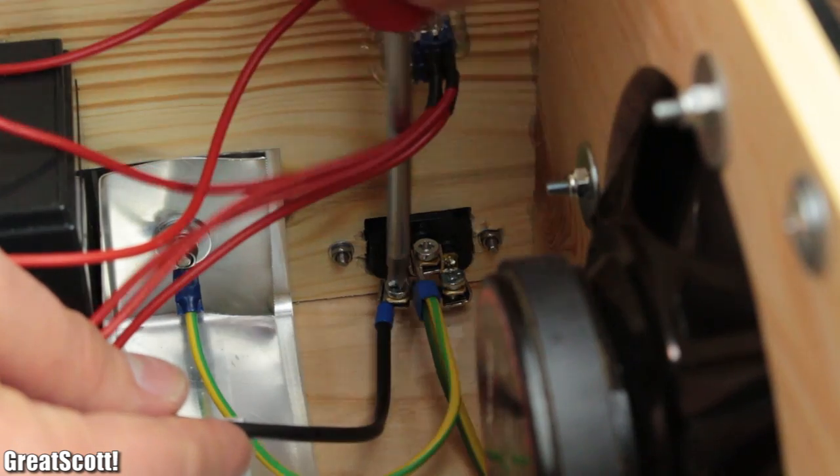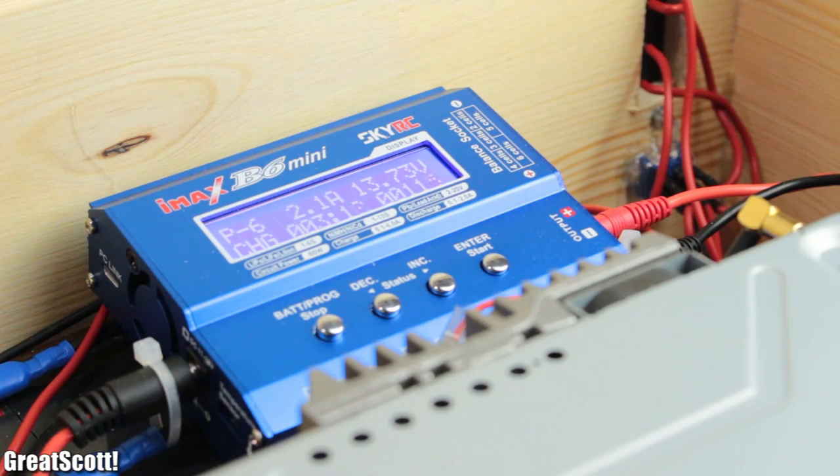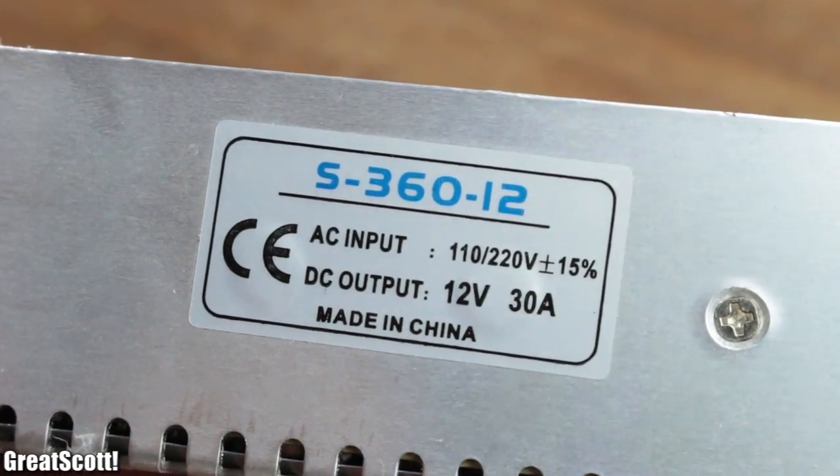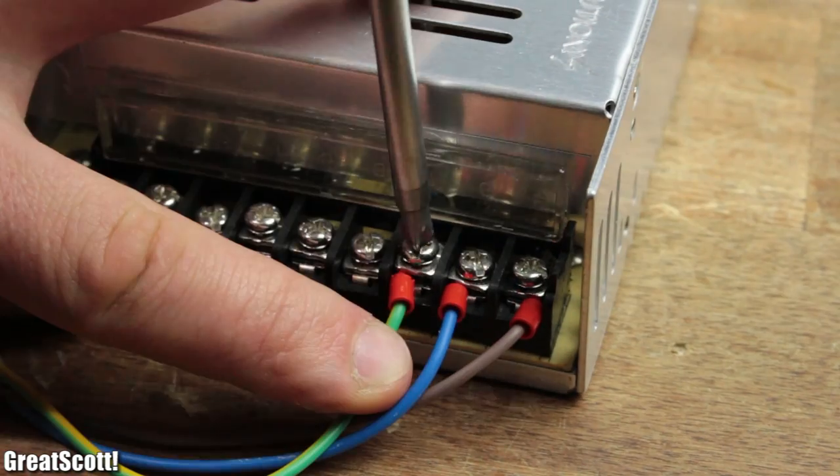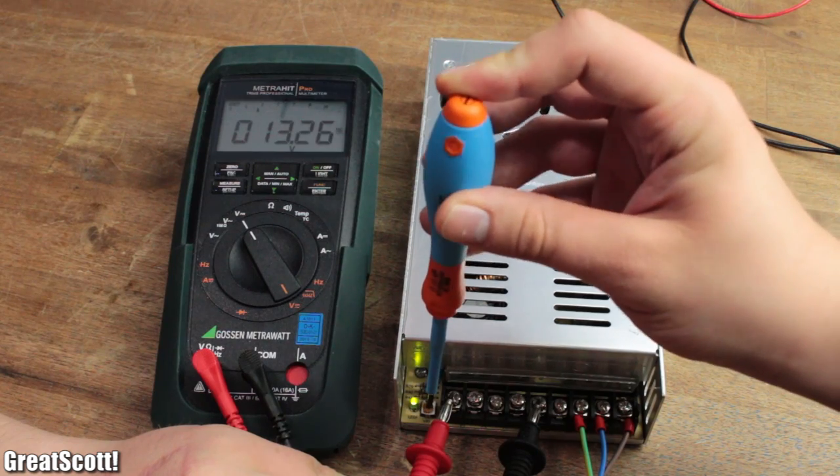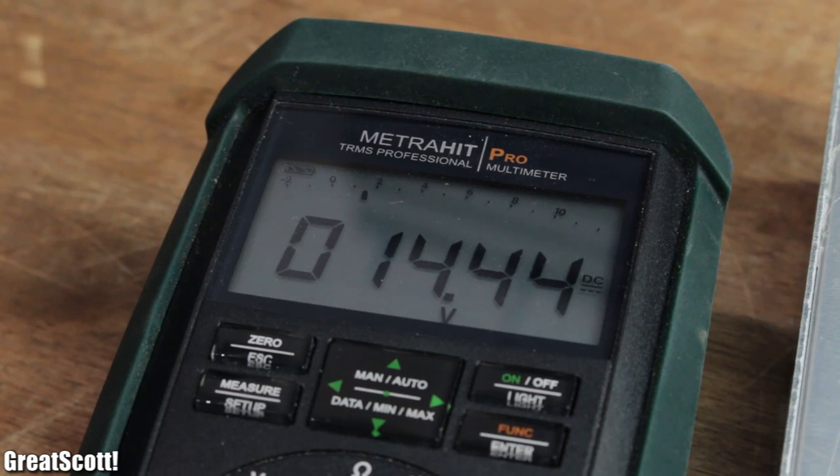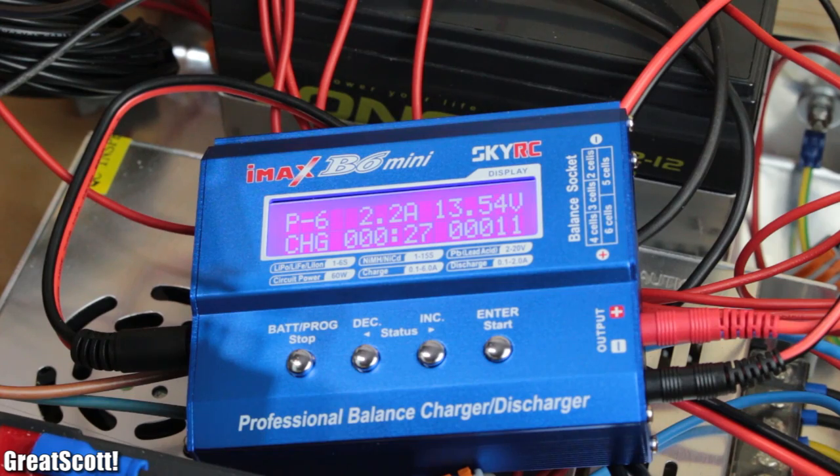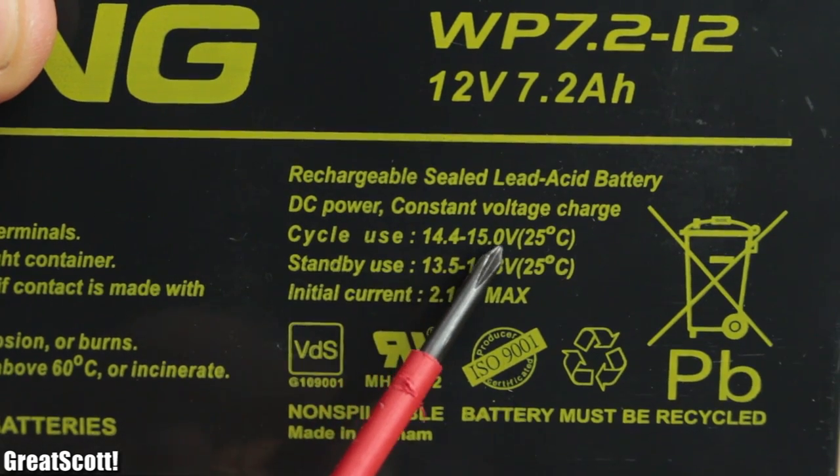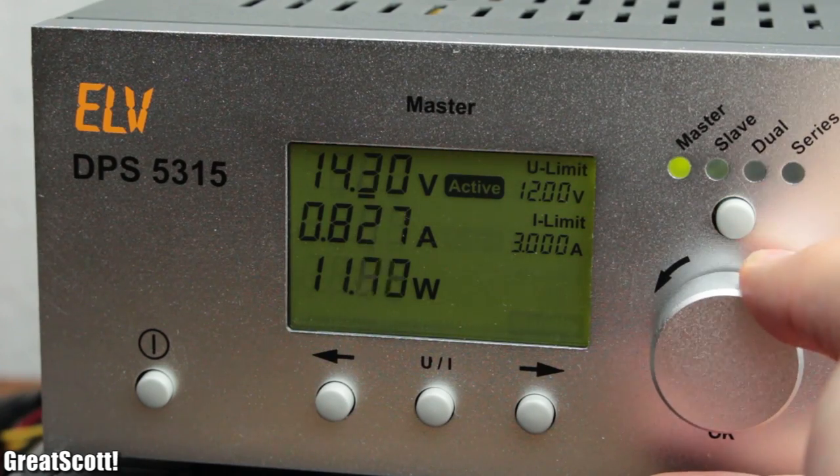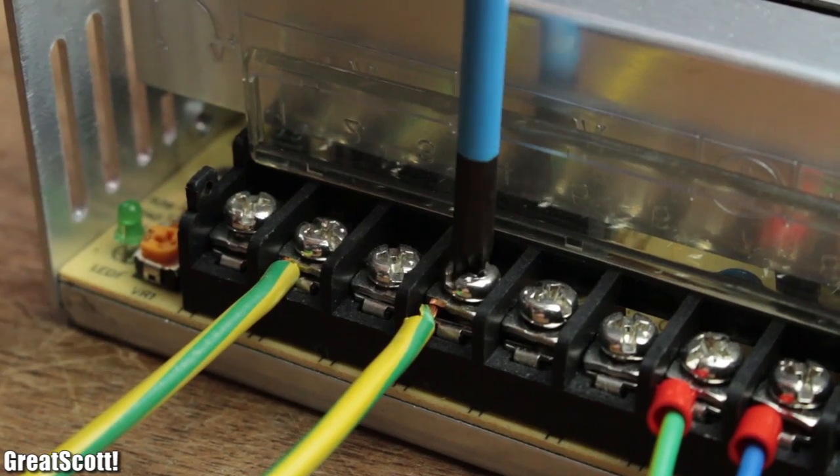To power the radio with mains voltage and charge the battery as well, I used a 12-volt 30-amp power supply. I hooked up the live, neutral, and protective ground wire, applied mains voltage, and set the output voltage to around 14.5 volts DC. This voltage is necessary to reach the charging voltage of 14.4 volts of the batteries and does also work as a supply voltage of the radio.